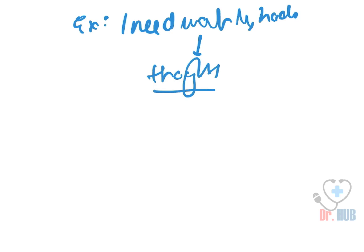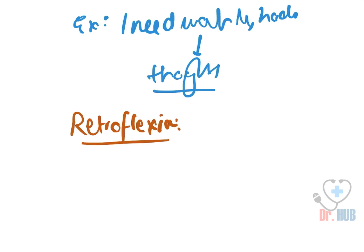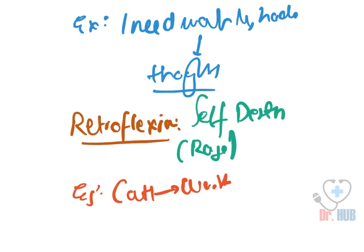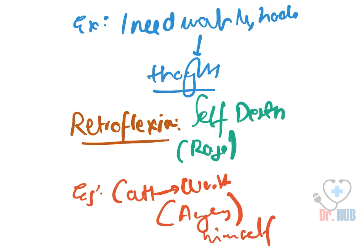Next is retroflexion. Retroflexion is self-destruction due to rage. An example is a person cutting their wrist because they are angry with themselves. This is an example of retroflexion.